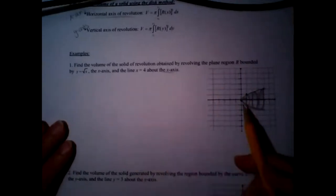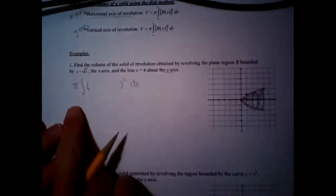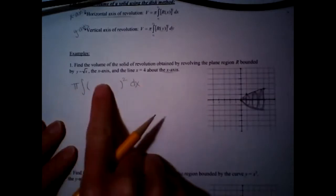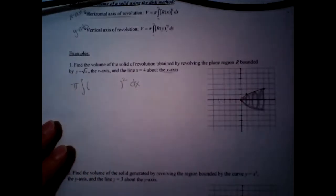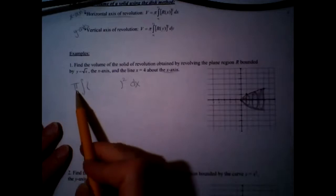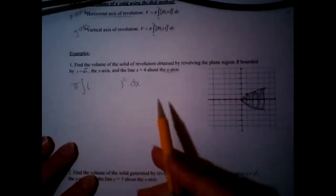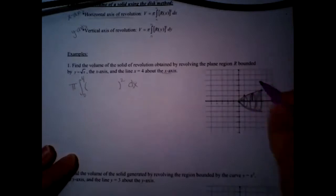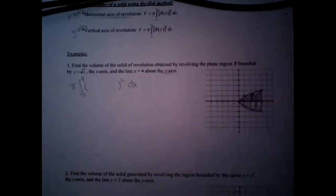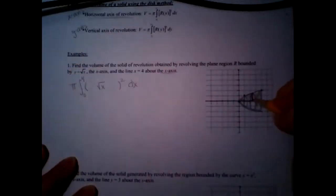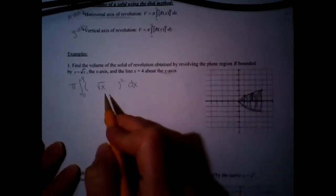So it's going to be a dx problem — we spun this around the x-axis. I always set up the problem as π r² dx. I call this the skeleton of the problem. Set it up: π r² dx. If you set it up every time and then go back and fill it in, you won't forget the π or the squared. Our boundaries on the x-axis are from 0 to 4. The radius is upper graph minus lower graph: √x minus 0, which is just √x.